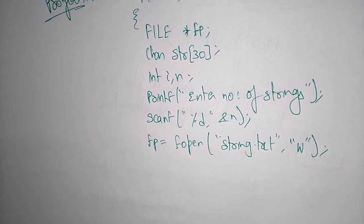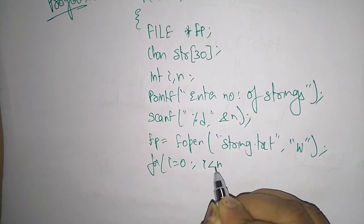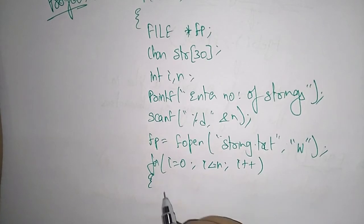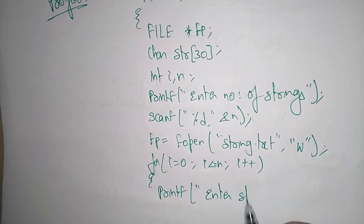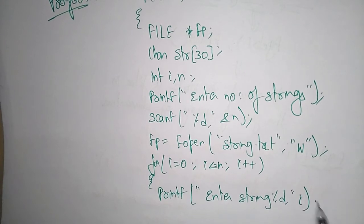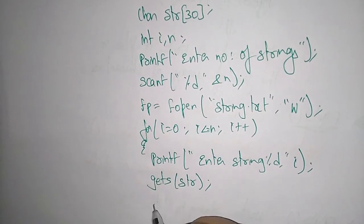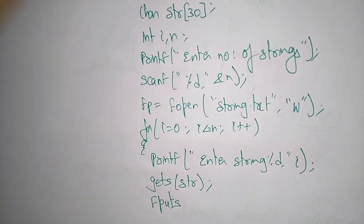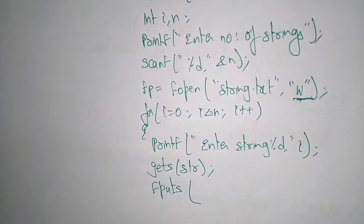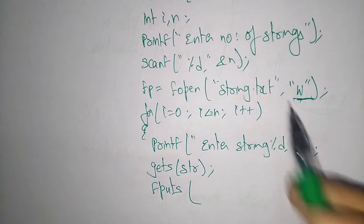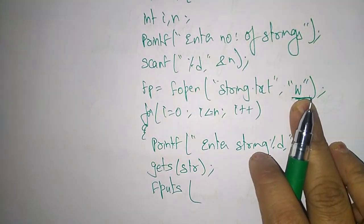Now in write mode, use a for loop: for(i = 0; i <= n; i++). Inside, printf to enter the string with index i, then use gets to read the string into str. Then use fputs — since the file is opened in write mode, whatever string you want to save into string.txt, you use fputs.